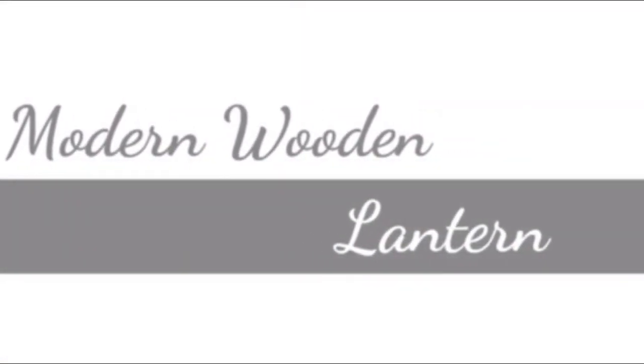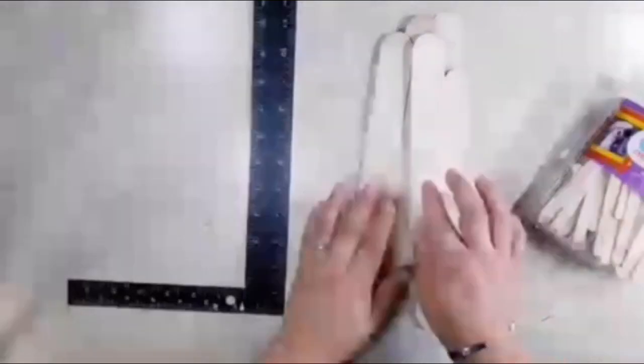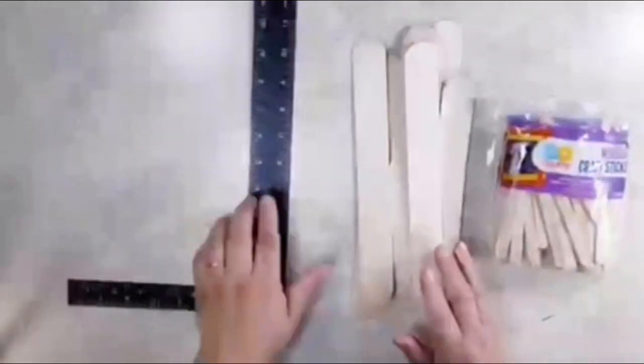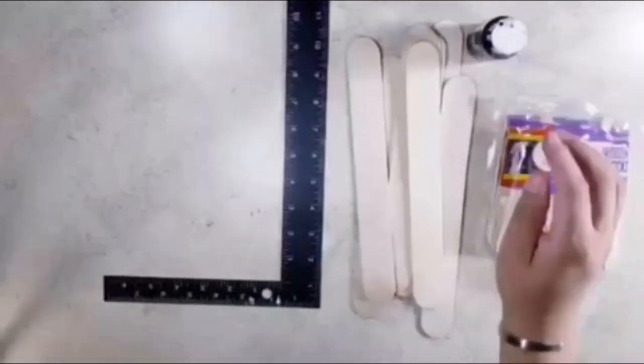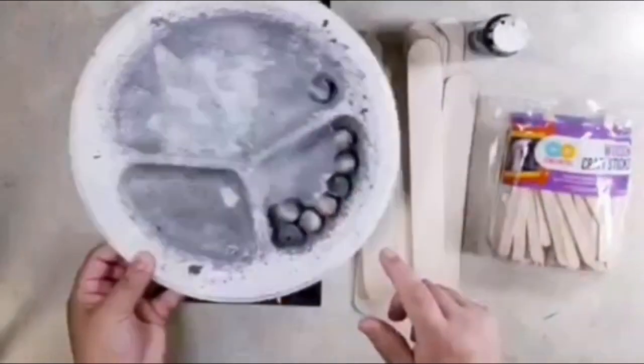My next DIY is a modern wooden lantern. Some materials I will be using are some more popsicle sticks, two different sizes, this L-shaped ruler I got from Dollar Tree, and this black paint and some leftover wooden beads.